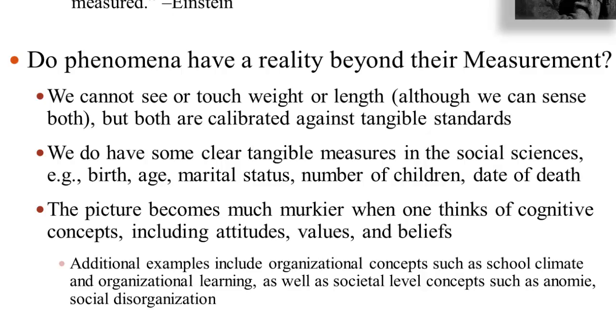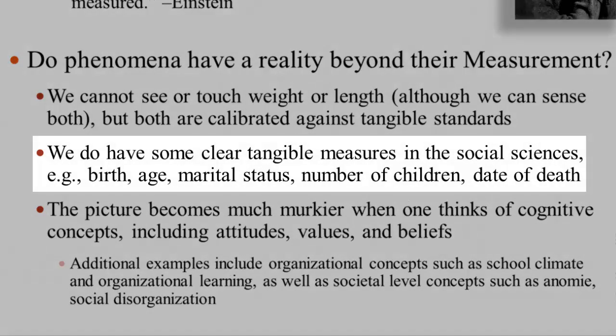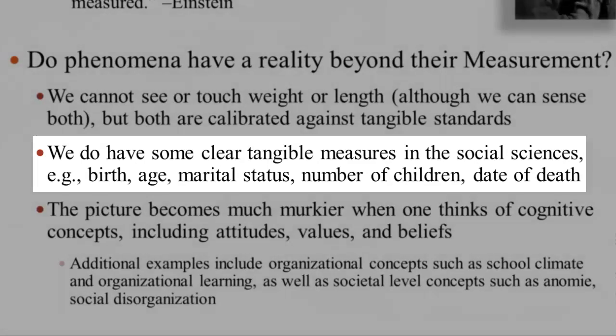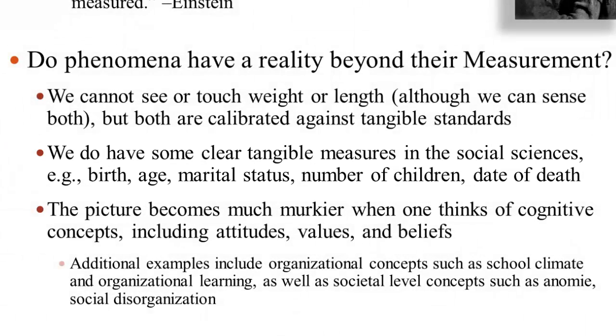In the social sciences, we have some tangible measures. We know when people are born, we know their age, we know if they're married, the number of children, the number of years of education, the year that they died, and so forth. Those are fairly clear and tangible measures.